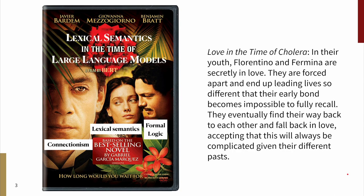We worked very hard on this poster for the talk. In Love in the Time of Cholera, Florentino and Fermina are secretly in love in their youth. They're forced apart and end up leading lives so different that their early bond becomes impossible to fully recall. They eventually find their way back to each other and fall back in love, accepting, though, that this will always be a complicated love given their very different pasts.